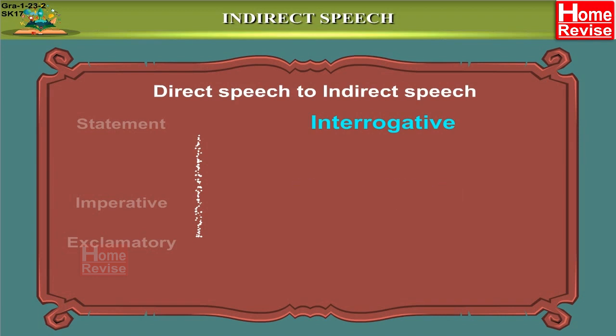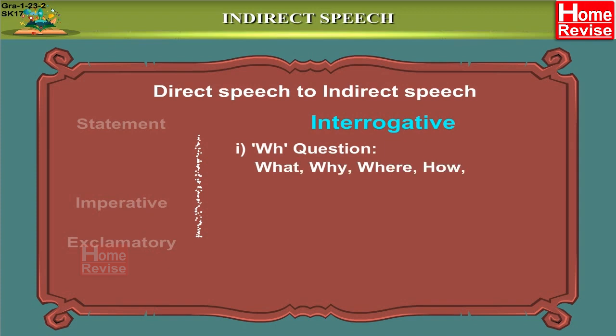There are two types of questions. The first kind is called a WH question, which begins with a questioning word. Questioning words can be what, why, where, how, etc. Such questions are called WH questions. For example, 'What do you want?' — it's a question, so this is an interrogative sentence.